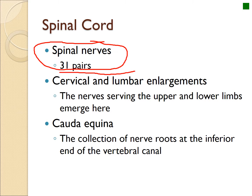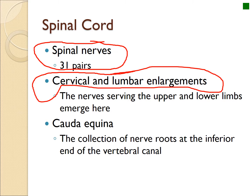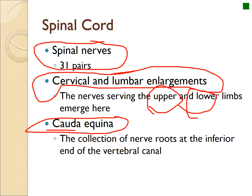We see a cervical enlargement and lumbar enlargement — lumbar meaning the lower back — that serve as almost a little mini brain for coordinating the upper and lower limbs, usually for posture and complex movements. Then we have the cauda equina, which means the tail of the horse, where the spinal cord is no more a cord and becomes a bunch of branches that handle the inner lower leg and the external genitalia.